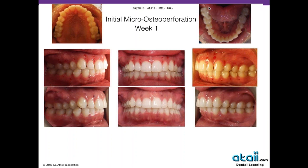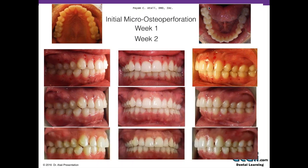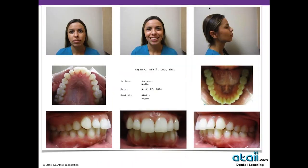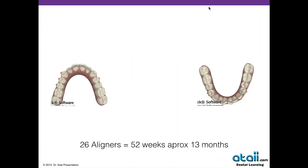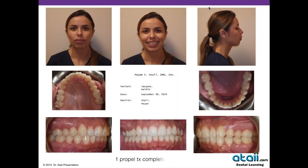In this case, you saw Nadia — a little overjet, a little deep bite, and the aligner treatment came back as 26 aligners, about 52 weeks, putting me over a year. With one Propel treatment, we finished the case in less than six months. She changed the aligners once every four days and we were able to line up her bite with the major movements done in less than six months. Now we wait for the bite to settle and go into the retention phase.